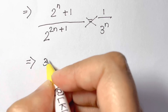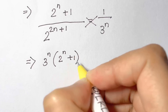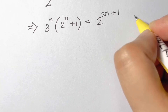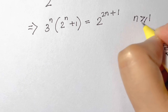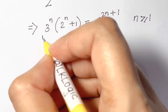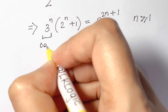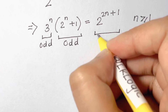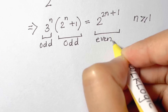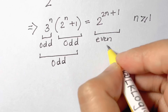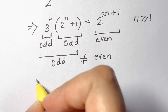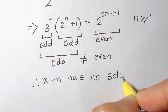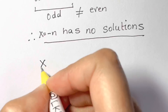3 to the power of n times 2 to the power of (n plus 1) equals 2 to the power of (2n plus 1). Since n is greater than or equal to 1, 3 to the power of n is odd, 2 to the power of (n plus 1) is odd, and 2 to the power of (2n plus 1) is even. Odd times odd is odd, which is not equal to even, so x equal to negative n has no solutions.